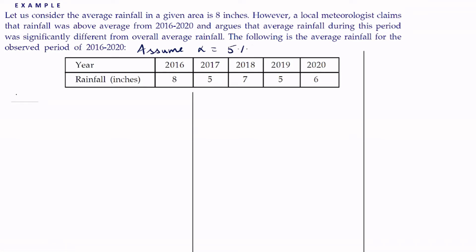Here n = 5, since we have observations for 5 years. So the sample size is 5. In the examples seen in the previous video, they directly gave the sample mean and the sample standard deviation, whereas here only the sample observations are given. We have to find the sample mean and the sample standard deviation.